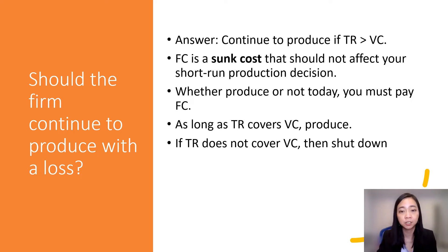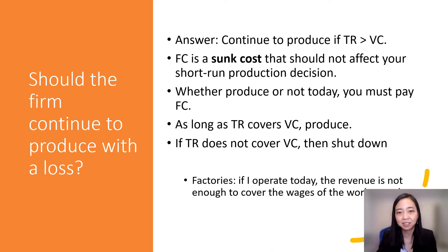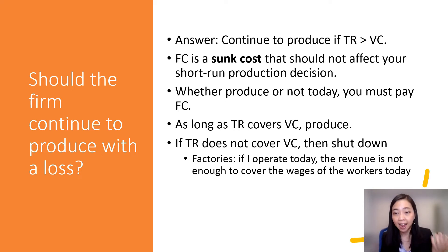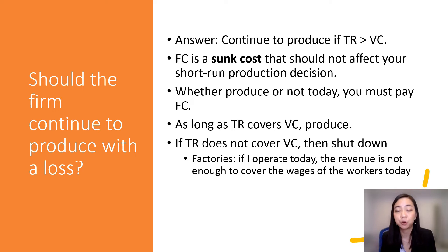So when do we have a situation where total revenue does not cover variable cost? Imagine that I have a factory, I operate today, and I hire some workers to produce some products. After I sell the products, I get some revenue — but that revenue cannot even cover the wages of the workers today. That means if today I operate my factory, I will end up owing workers some money. In that case, it doesn't make sense for me to produce. I should shut down my factory.